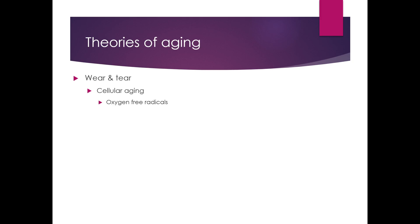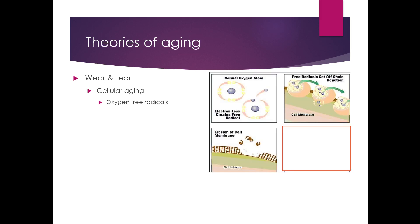Let's talk about wear and tear specifically and cellular aging. In a normal oxygen atom, electrons can lose their magnetic connection to the oxygen and leave the nucleus. That sets off a chain reaction in neighboring cells so that free radicals are released from those, and ultimately the cell membrane starts to deteriorate and the cells lose their structure. Unpaired electrons occur because of energy production — as you eat food, process food, and breathe, as you're producing energy, you are ultimately unpairing electrons. Free radicals are a waste product of the process of energy creation, and of course you can't really avoid that.